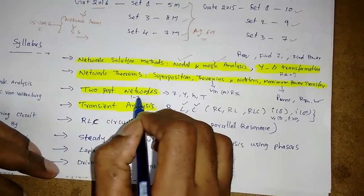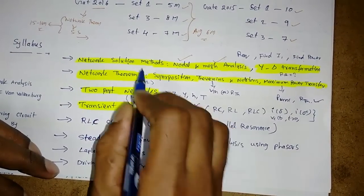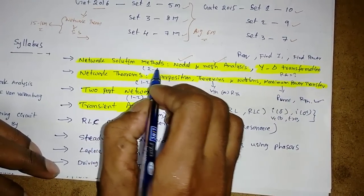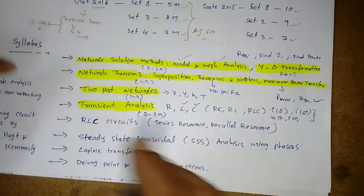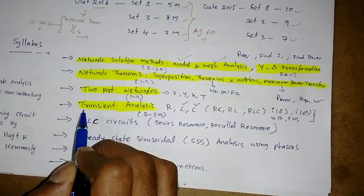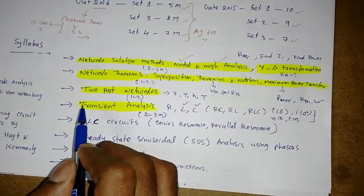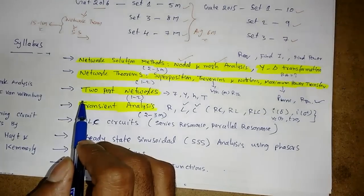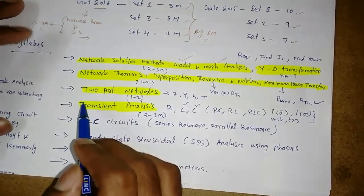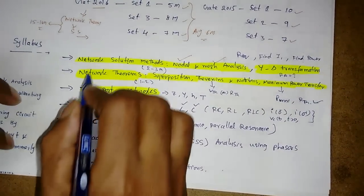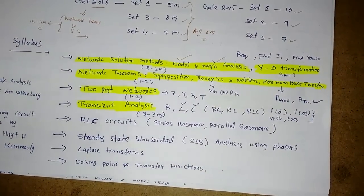Generally in the transient analysis we may get two to three marks, there is no doubt. Under two port networks, one to two marks confirmed question. Network theorem, same one to two marks questions. If you prepare these four concepts, so it's now November 15, we will have only two months gap. If someone has not started network theory, they can start with the four concepts.